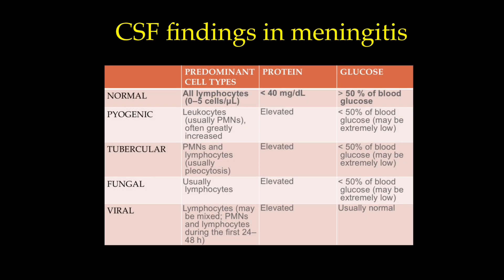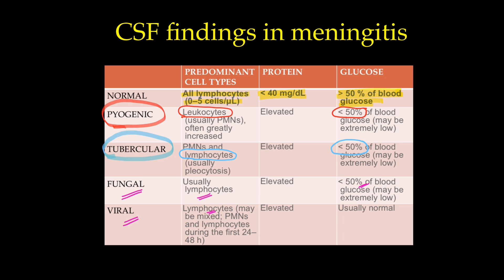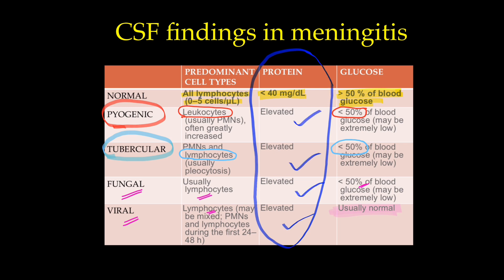We should always correlate CSF findings with imaging findings. Normally, we see fewer than 5 lymphocytes, less than 40 mg protein, and more than 50% of blood glucose in CSF. In pyogenic meningitis, we find leukocytosis and less than 50% of blood glucose, as glucose is used up by the bacterial infection. In tubercular meningitis, we find lymphocytes and similarly less than 50% glucose. Fungal and viral meningitis also show lymphocytosis and less than 50% blood glucose. In all cases of infection, elevated protein is found in the CSF.